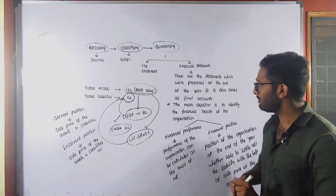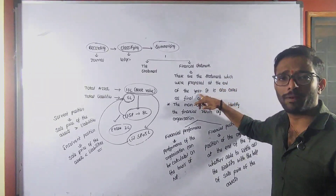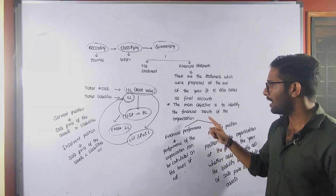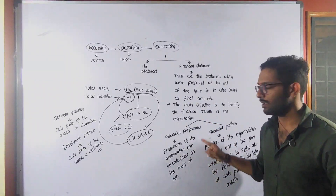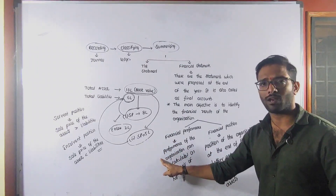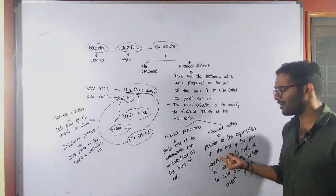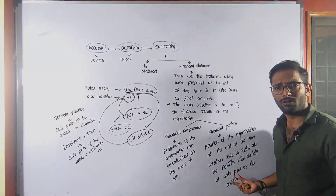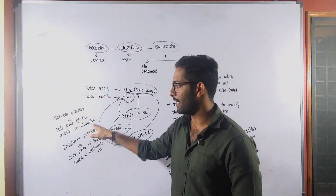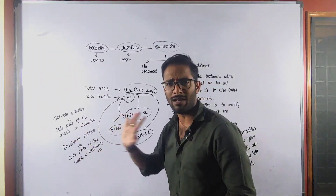This is financial position. Once again, financial statements are the statements which are prepared at the end of the year — that is also called final accounts. Financial statements are prepared to check the financial results of the organization. Those financial results are financial performance and financial position. Financial performance means performance of the organization can be calculated on the basis of net profit. Financial position means the position of the organization at the end of the year — whether able to settle the liabilities with the help of sale price of assets. If sale price of assets is greater than liabilities, it is a solvent position; if less, it is an insolvent position.